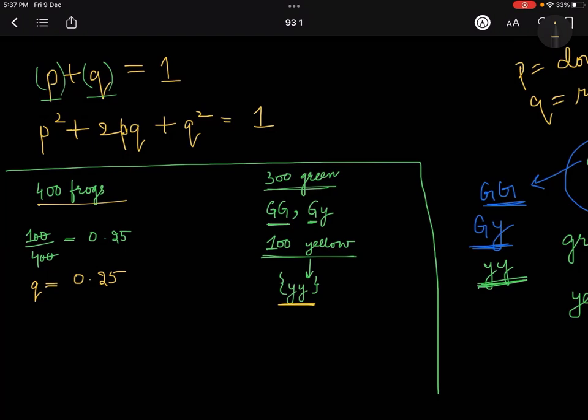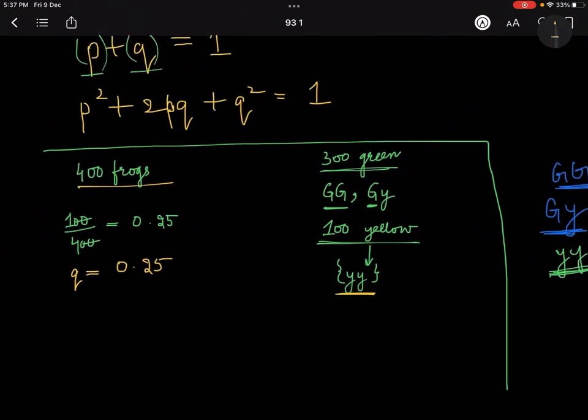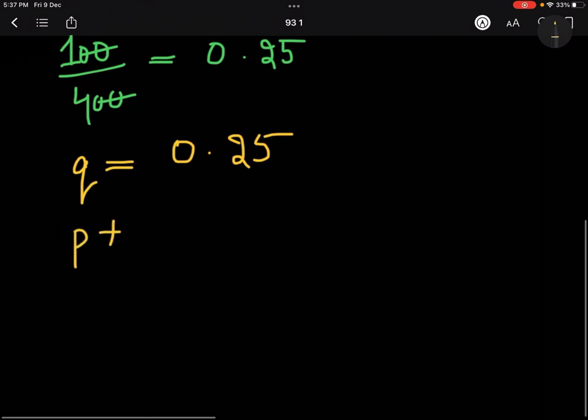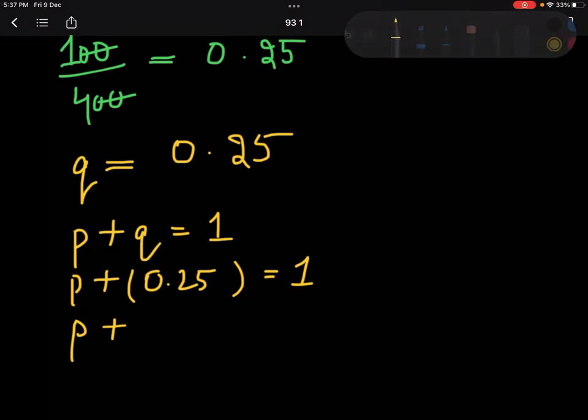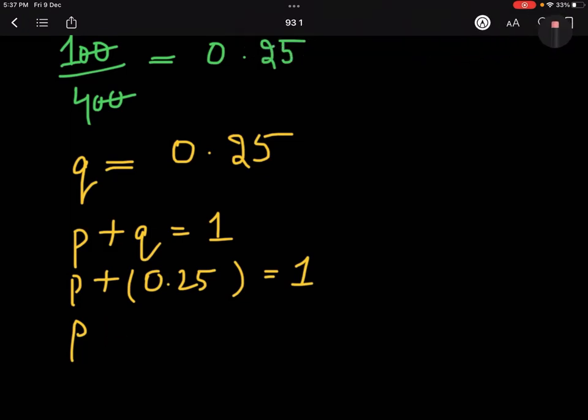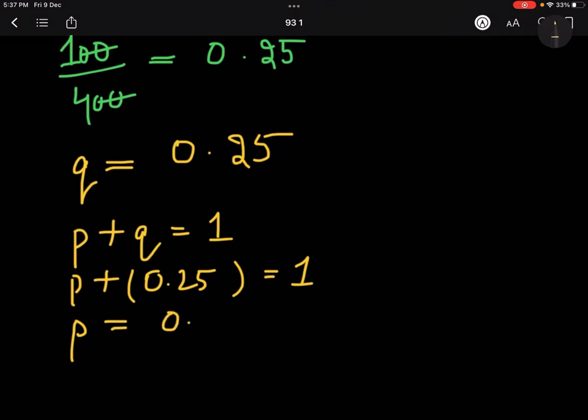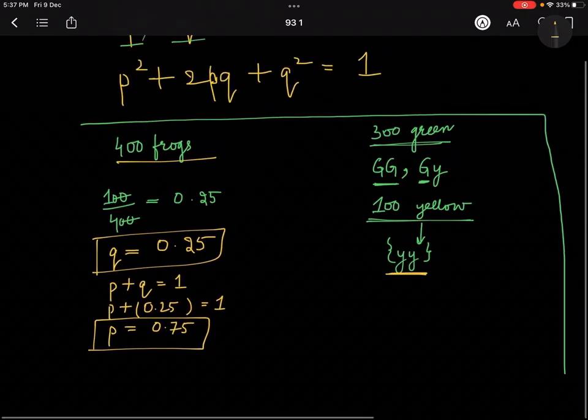That means the frequency of Q, here P and Q, let me tell you, Q is taken as the recessive gene, P is taken as the dominant gene. So we got the value of Q as 0.25 because there were 400 frogs, 300 were green, from that we got to know how many were yellow. Yellow because they were homozygous, their frequency is not going to change. From this we can find out the frequency of dominant allele. How? If P plus Q is equal to 1, then P plus 0.25 is equal to 1. So P transpose, P's value will come 0.75.